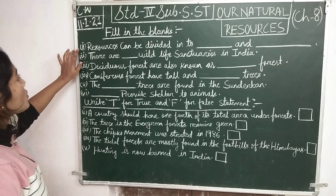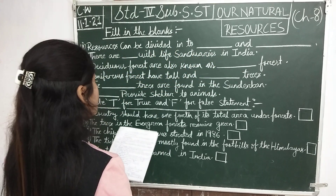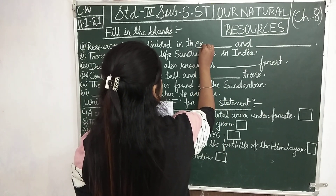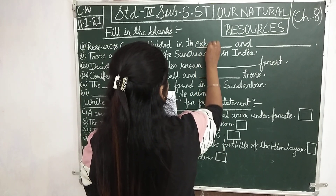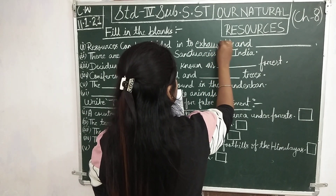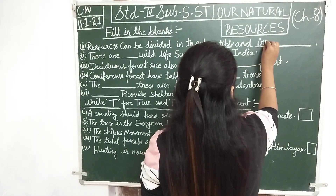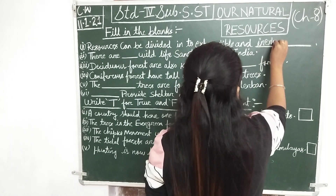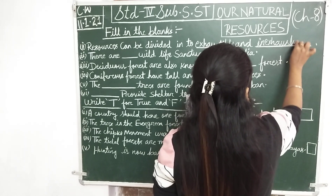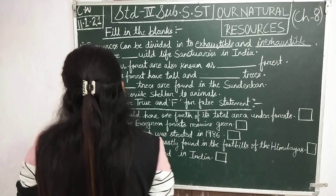Fill in the blanks. The first question is: resources can be divided into two types — exhaustible and inexhaustible. Exhaustible is spelled E-X-H-A-U-S-T-I-B-L-E, and inexhaustible is spelled I-N-E-X-H-A-U-S-T-I-B-L-E.